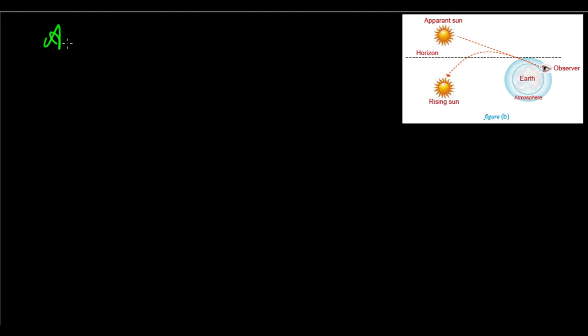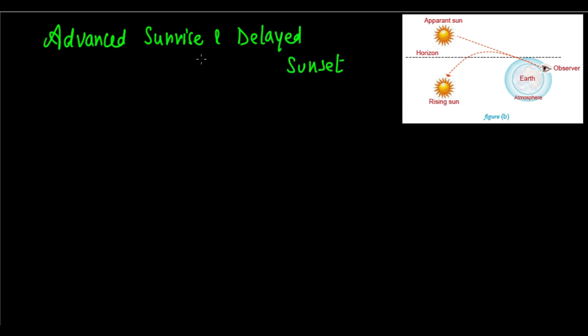Now look at the phenomena of advanced sunrise and delayed sunset. This means that we see sunrise two minutes before actual sunrise — we see the Sun rise two minutes before it actually rises — and we see it go down two minutes after the actual sunset. So why is there this time difference? It is a phenomenon of atmospheric refraction.